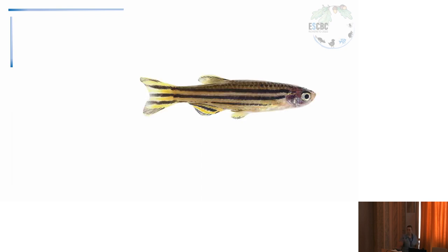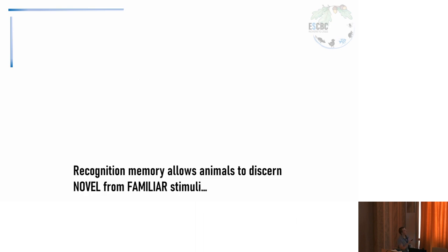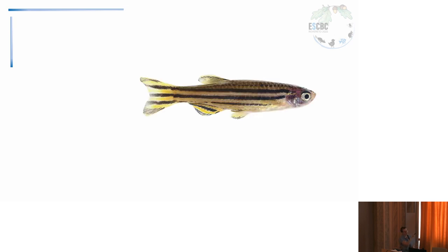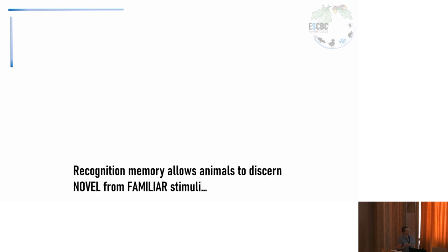I want you to watch this image, try to remember it — and is this one the same one as before? It is. Same characteristics: color, shape. But what about this one? In a simplistic point of view, the resolution for the task I asked you to resolve is the formation of a memory trace for the first stimulus shown, which is then used by your brain to recognize the second familiar stimulus and also put in contrast with the novel stimulus — in this case, the zebrafish. In nature, recognition memory allows animals to discern novel and familiar stimuli, which is very important in many different contexts.